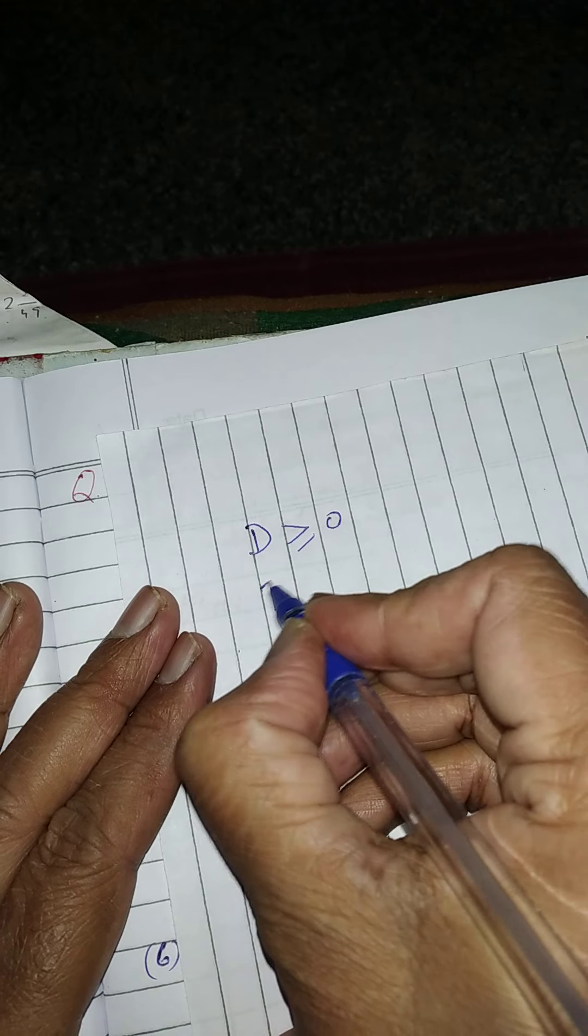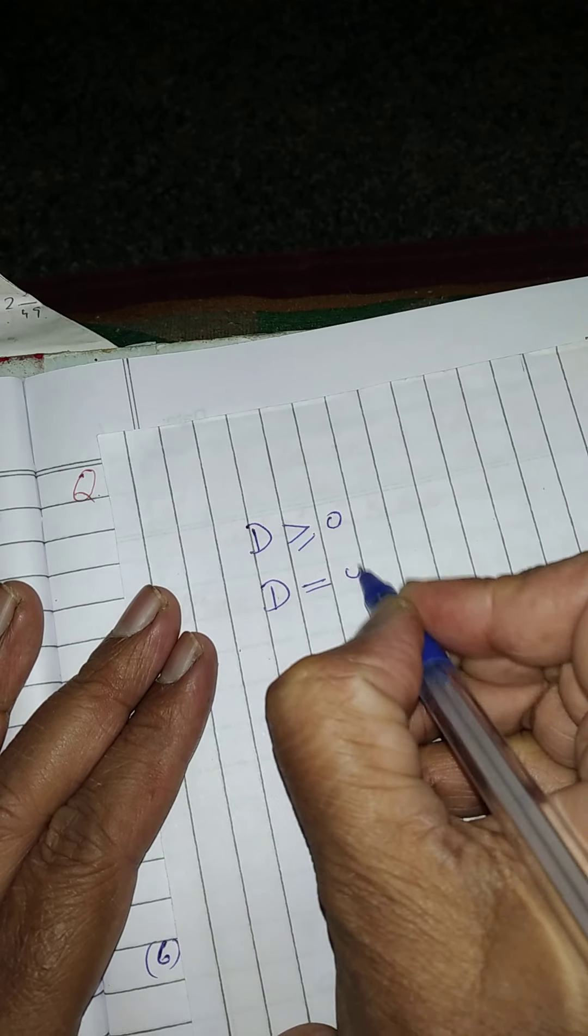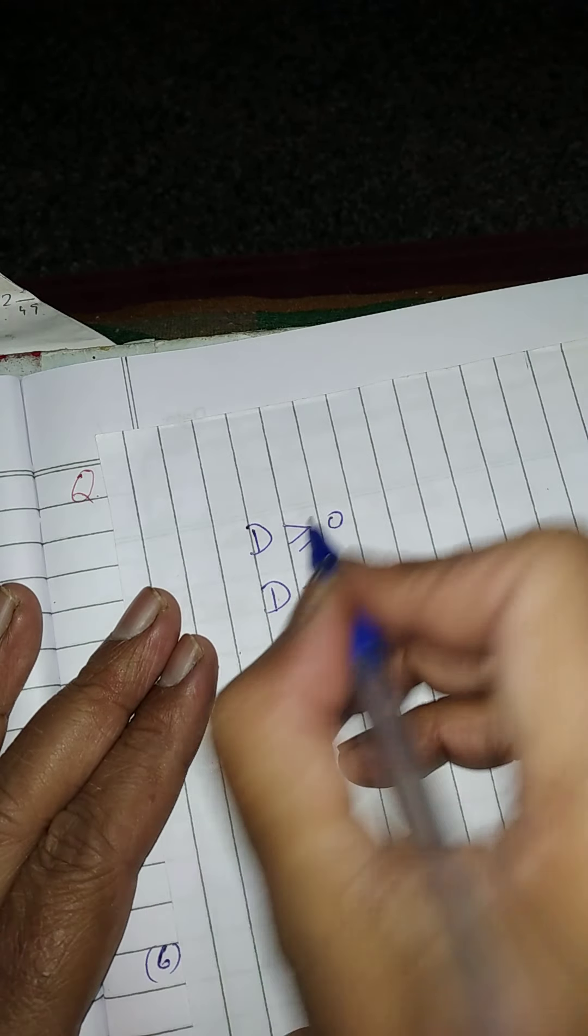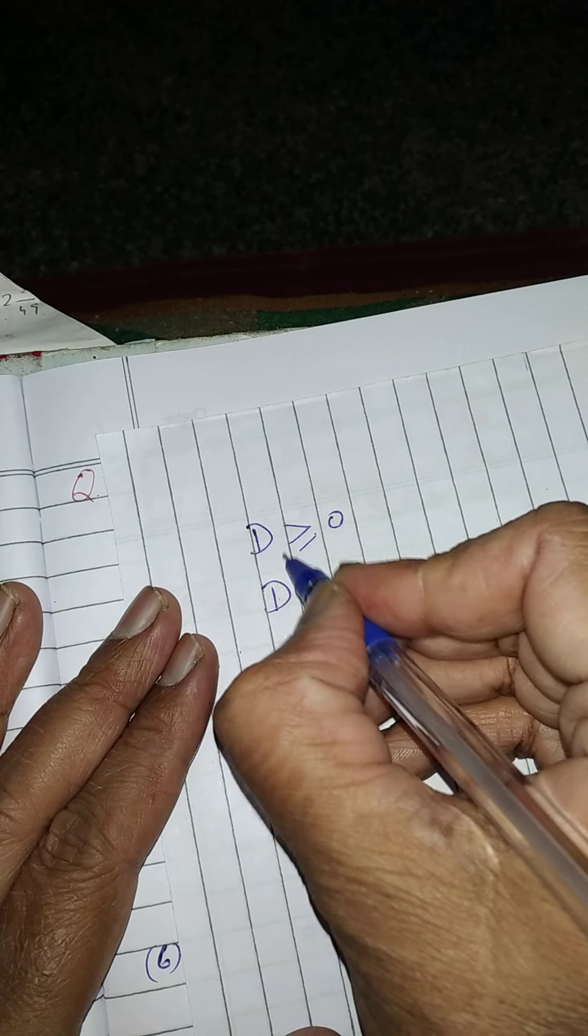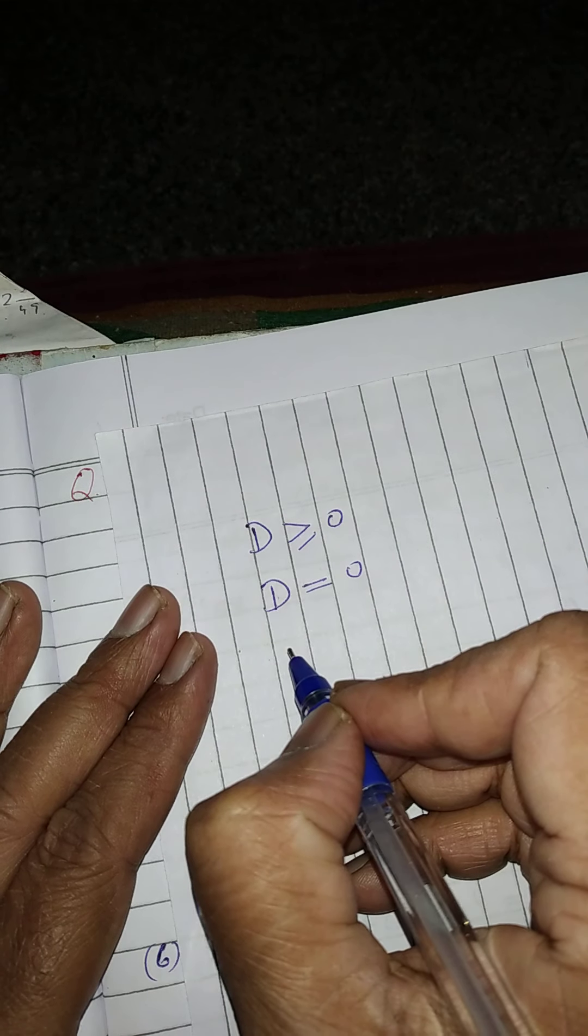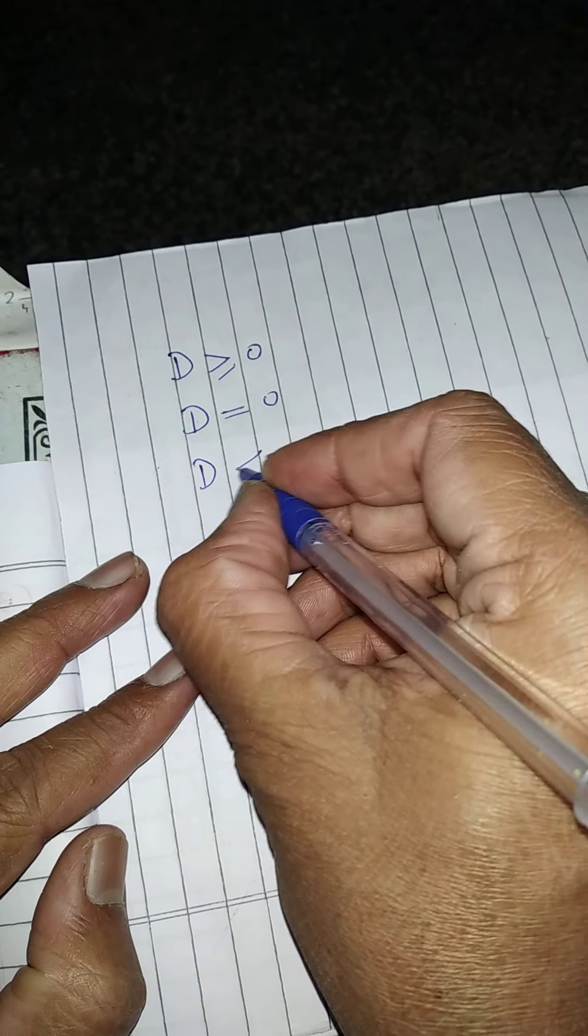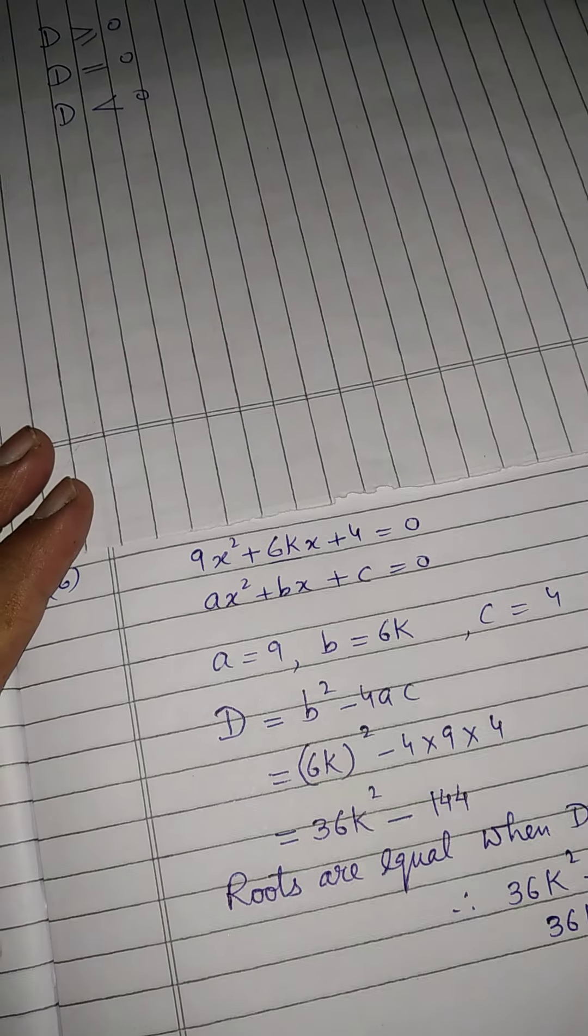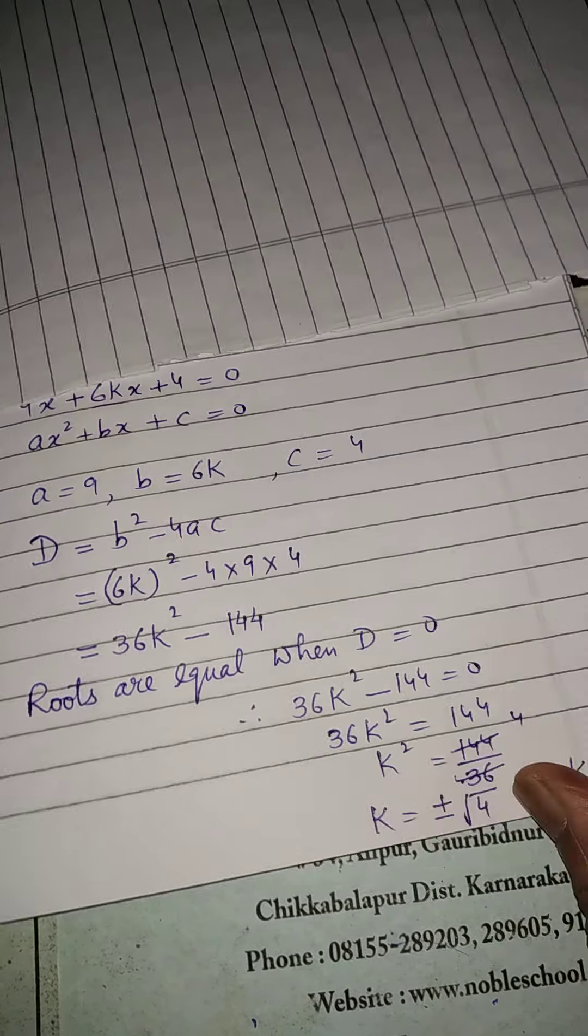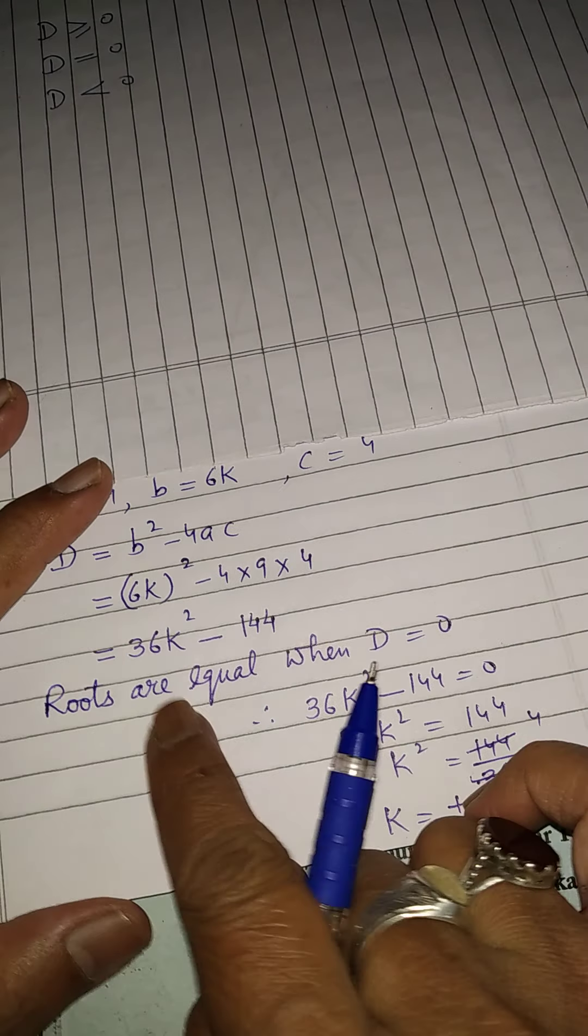If they are asking only equal root, then we will have to put d is equal to 0. If they are asking real roots, then we will have to put both condition greater than or equal to. And if they are asking find the value of k for which it has not real roots, in that case, we will have to put d is less than 0.